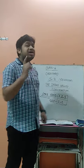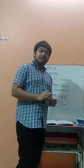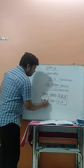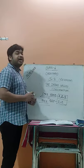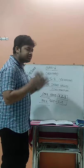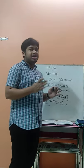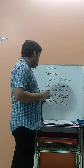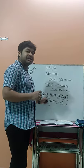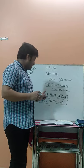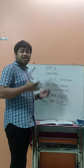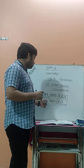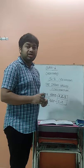The second is Rakhaldas Banerjee. In the year 1922, he discovered the city of Mohenjo-daro. So remember: Daya Ram Sahni discovered Harappa in 1921, and Rakhaldas Banerjee discovered Mohenjo-daro in 1922.